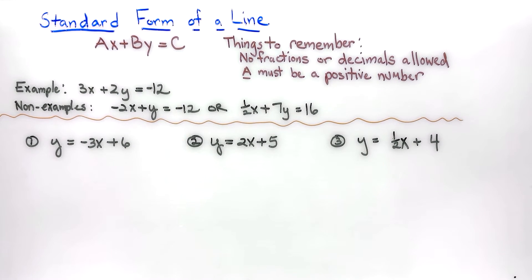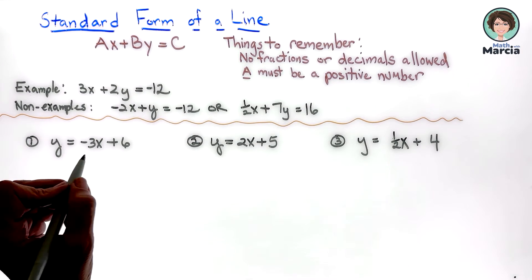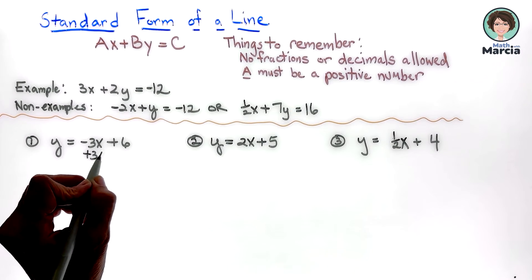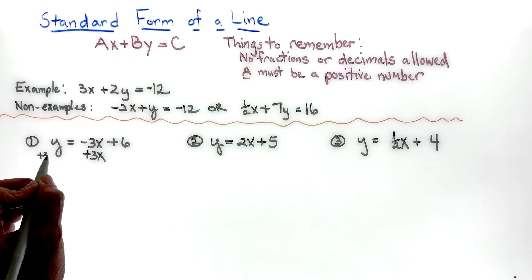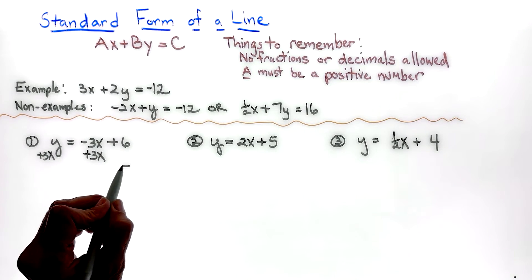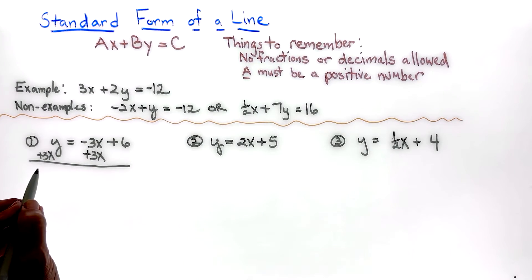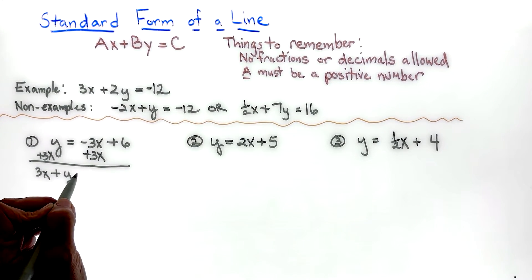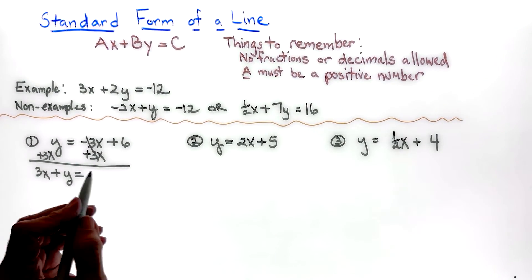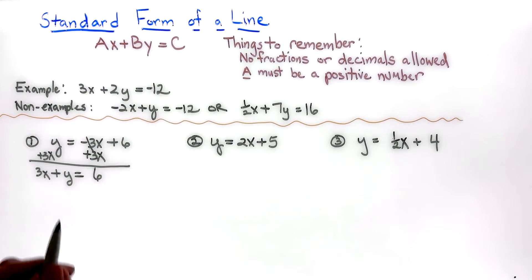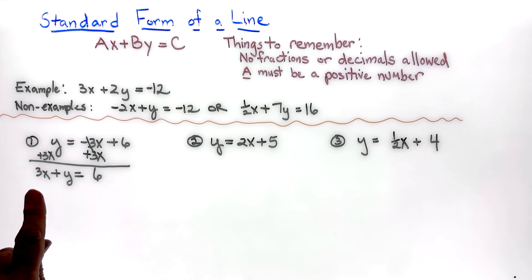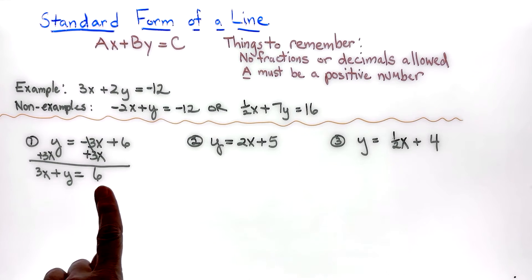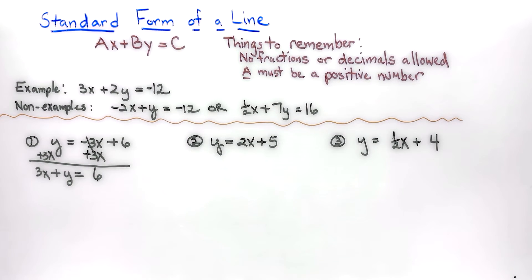For number one, it's pretty much one simple step: x needs to get to the other side and be in front of y. So I write 3x plus y equals 6 — standard form, no fractions, no decimals, positive number in the front.